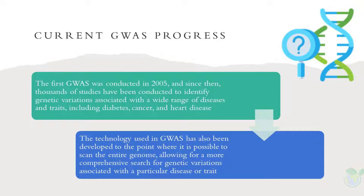Current GWAS Progress. The first GWAS was conducted in 2005, and since then, thousands of studies have been conducted to identify genetic variations associated with a wide range of diseases and traits, including diabetes, cancer, and heart disease. The technology used in GWAS has also been developed to the point where it is possible to scan the entire genome, allowing for a more comprehensive search for genetic variations associated with a particular disease or trait.